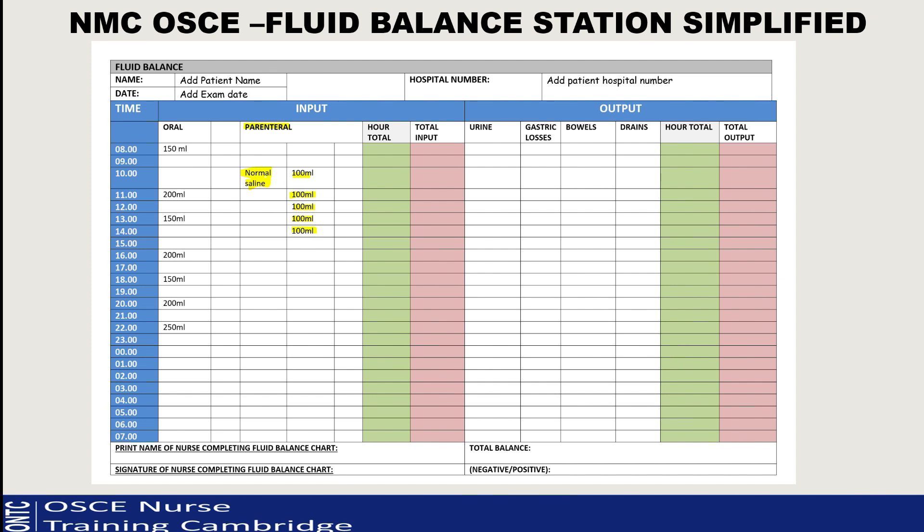You don't need to keep repeating the name of the fluid for every hour - just put it once at 10 o'clock when the bag started. Then 100ml at 10, 100ml at 11, 100ml at 12, 100ml at 13, 100ml at 14 - that's your five lots finishing at 14:00. There is nothing in the 15:00 box because we are finishing that fluid at 15:00. Count your lots based on how many hours you're giving in your scenario - that's the principle.